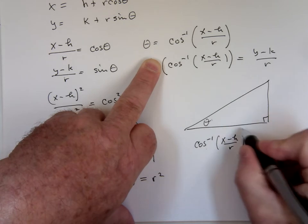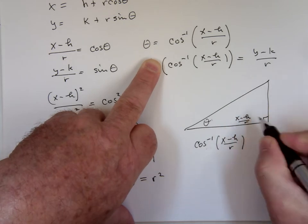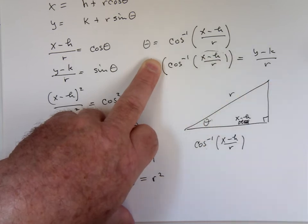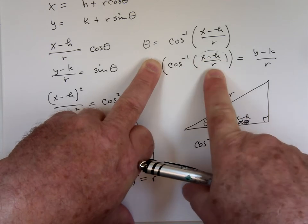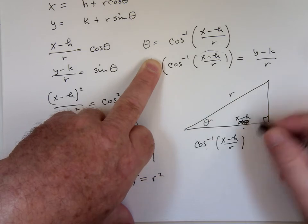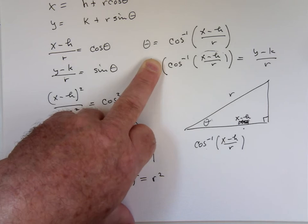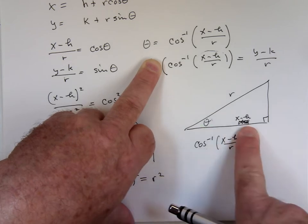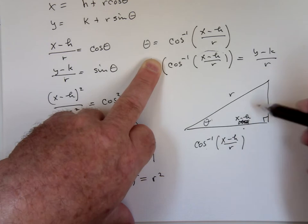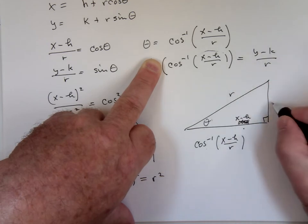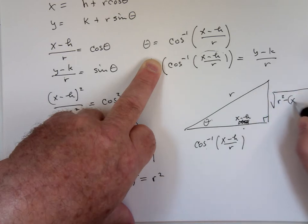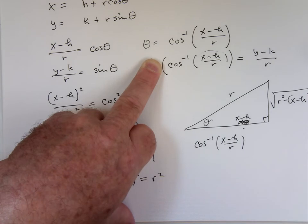I'll make the adjacent side X minus H and the hypotenuse R. The cosine of this angle is X minus H over R, adjacent over hypotenuse. Solve for the other leg using the Pythagorean theorem. The other leg is therefore the square root of R squared minus (X minus H) squared.